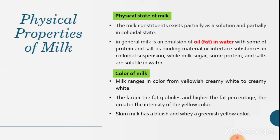First is the physical properties of milk. The physical state of milk: the milk constituents exist partially as a solution and partially in colloidal state. In general, milk is an emulsion of oil in water or fat in water with some of protein and salt as binding material or interphase substances in colloidal suspension.